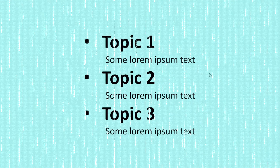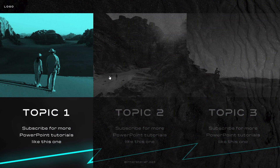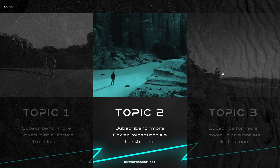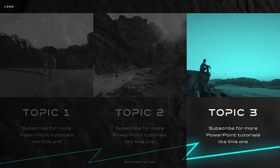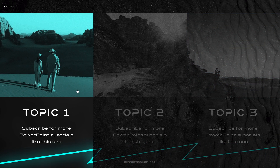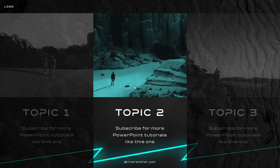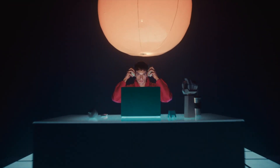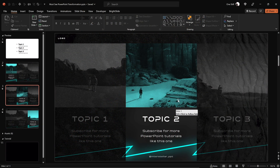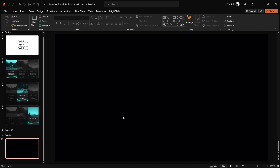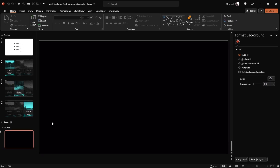Let's turn this slide into this one. I'm using PowerPoint 365. Let's start with this empty slide. First, let's find a picture that we can use as a slide background. To save some time, I've downloaded some photos from unsplash.com that we can use.